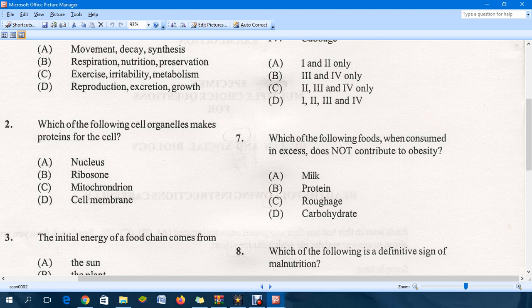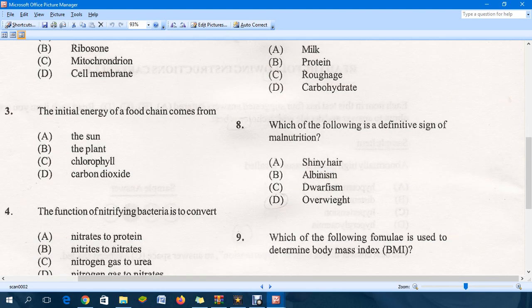Question eight: Which of the following is a definitive sign of malnutrition? The word malnutrition can either mean you're eating too much or you're eating too little of a particular nutrient. The answer is D, overweight. You're consuming too much fat, too much carbohydrates, and that can lead to overweight or obesity.